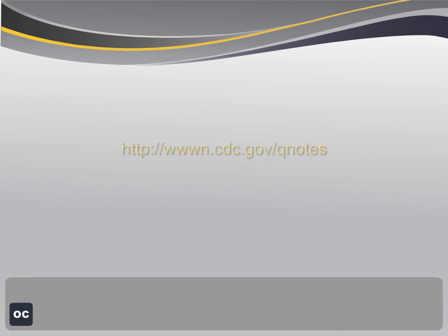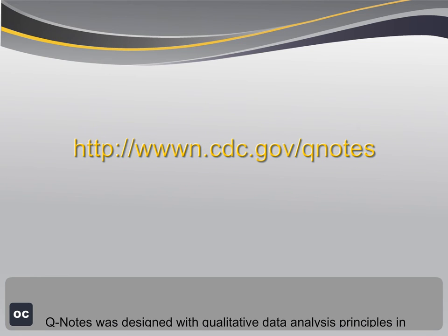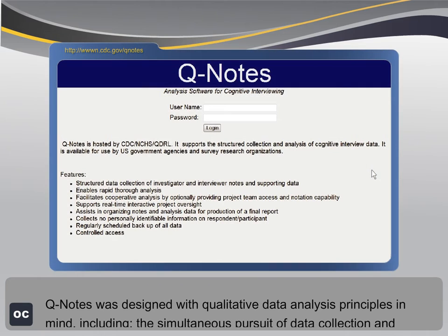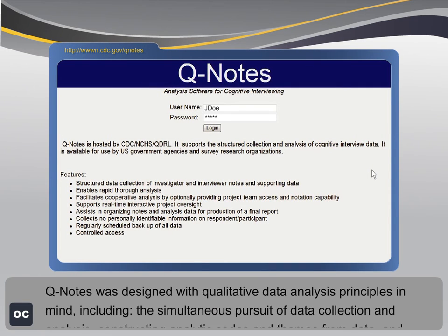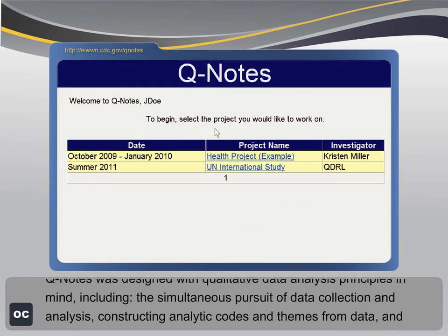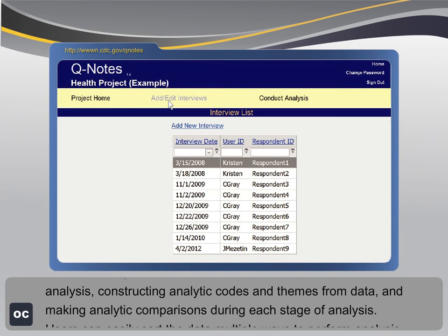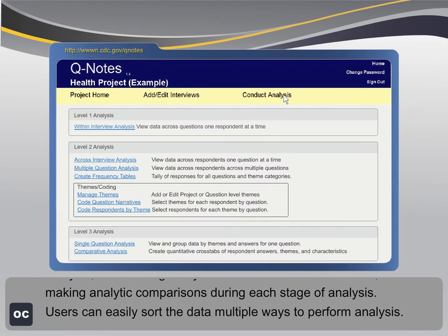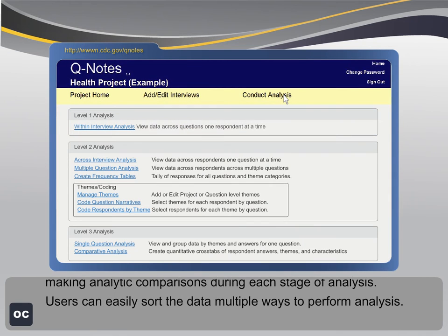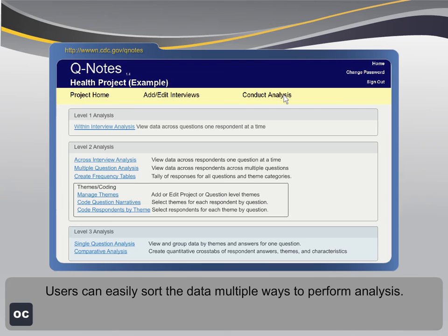Q-Notes was designed with qualitative data analysis principles in mind, including the simultaneous pursuit of data collection and analysis, constructing analytic codes and themes from data, and making analytic comparisons during each stage of analysis. Users can easily sort the data multiple ways to perform analysis.